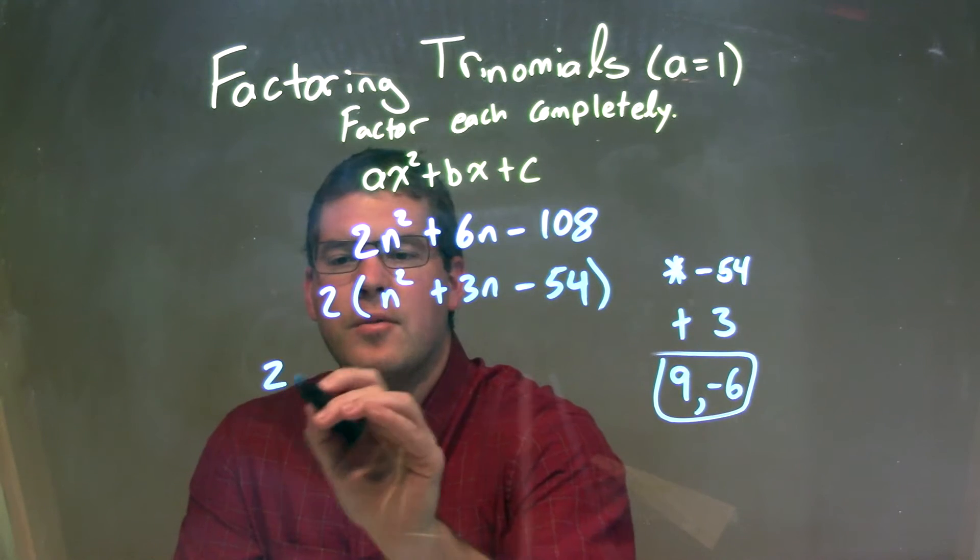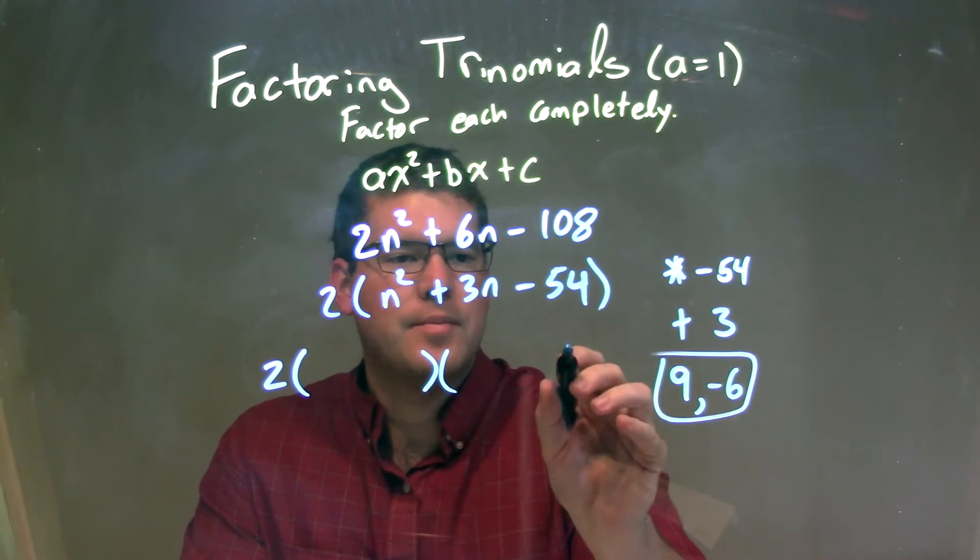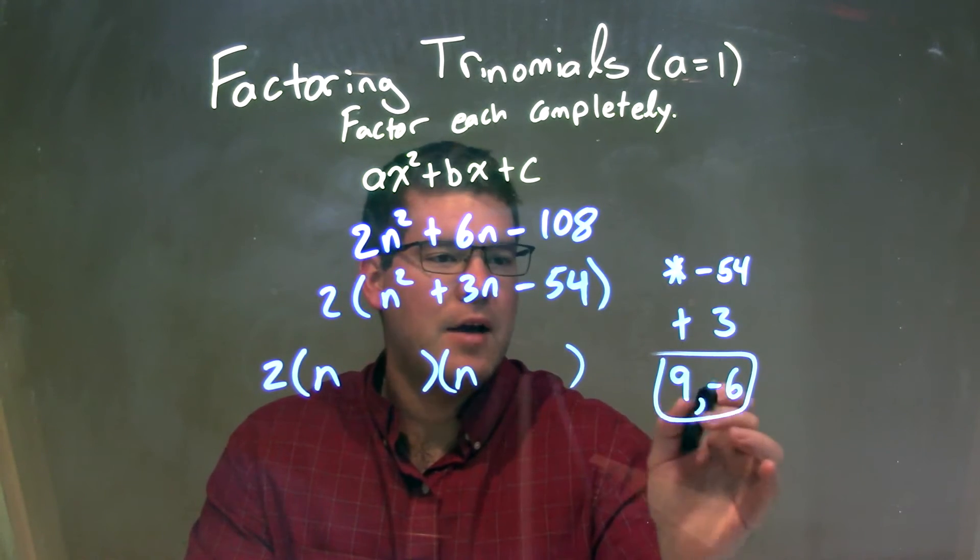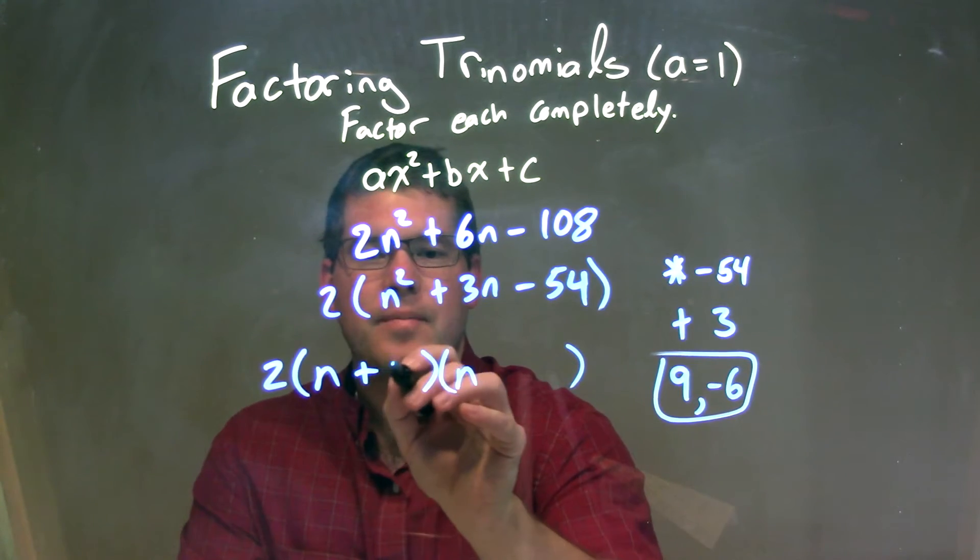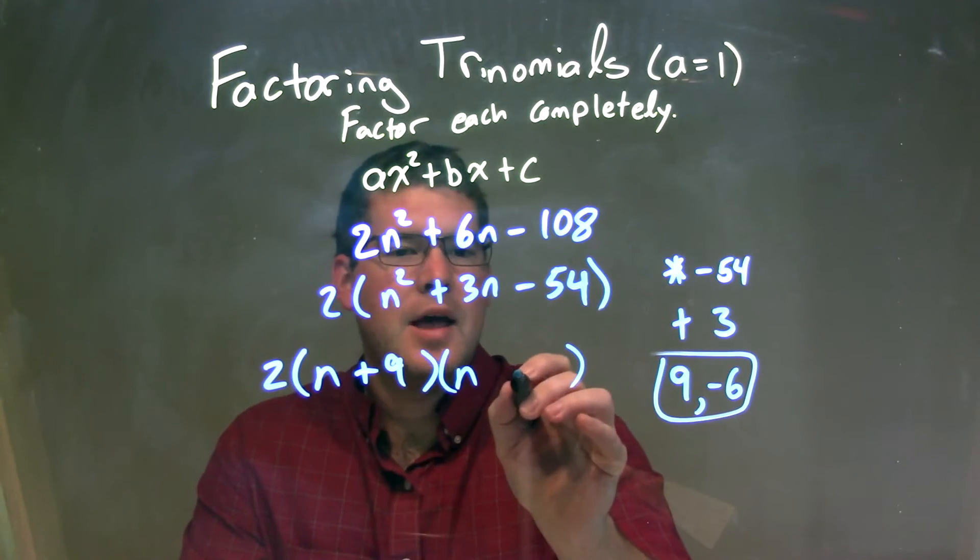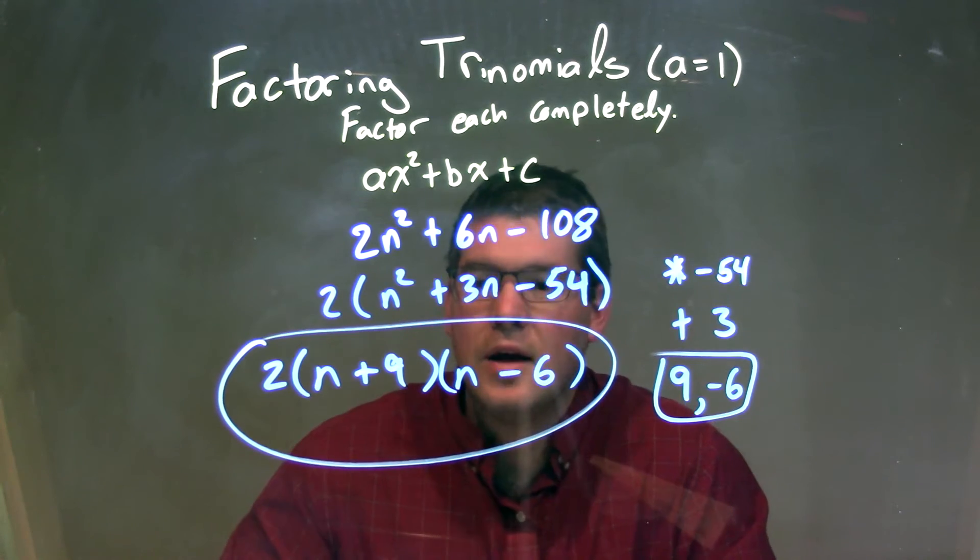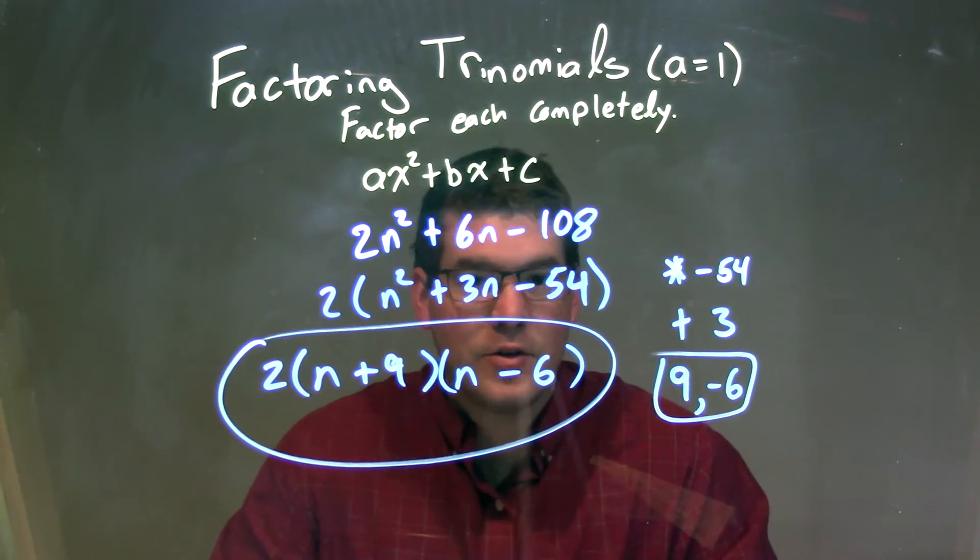So when we break this apart, the two still stays outside, and we have our two parentheses here. We're going to have n at the beginning of each one, and then we're going to have the numbers we found here, n plus 9, like that, and n minus 6. And there we go. Our final answer is 2 times n plus 9 times n minus 6.